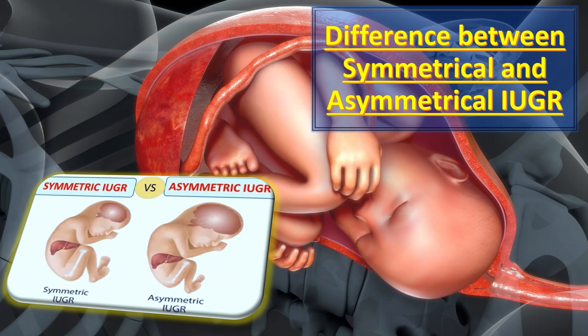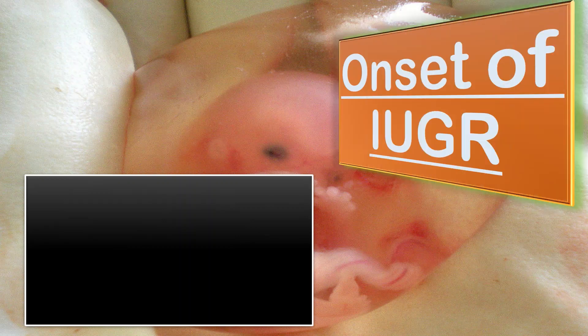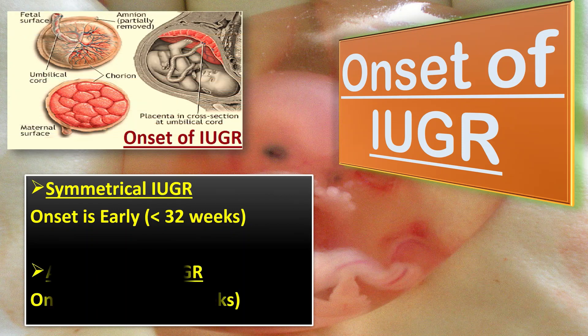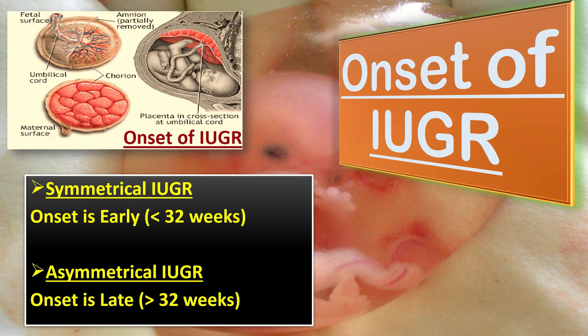The first difference is about the onset of IUGR. In symmetrical IUGR, the onset is usually early, meaning it starts at less than 32 weeks of gestation. In asymmetrical IUGR, the onset is usually late, meaning it starts at more than 32 weeks of gestation.